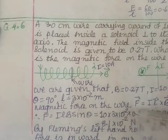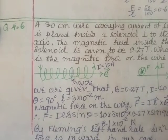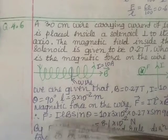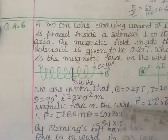I value is 10, L is 3 into 10 to the power minus 2 because they have given us in centimeters. B is 0.27 Tesla and sine 90...